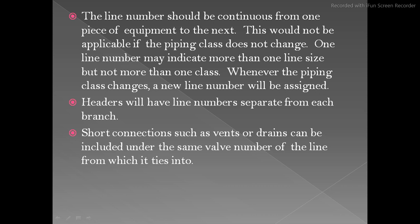When the line number changes, the piping class changes — you get a spec break and the line number changes. Headers have line numbers separate from each branch; a header has its own line number and it cannot be the same as any branch. Short connections such as vents or drains can be included under the same line number of the line from which they tie into.